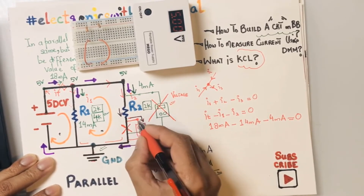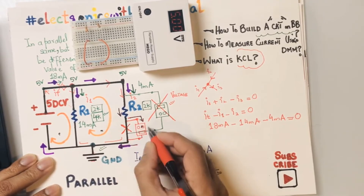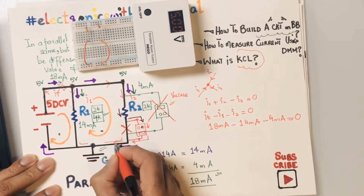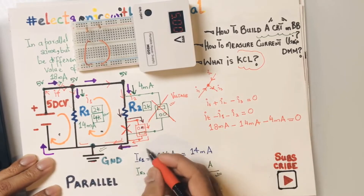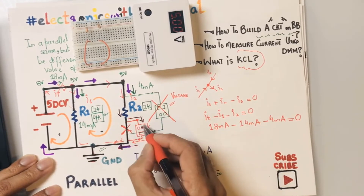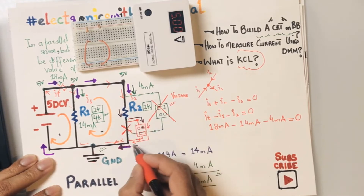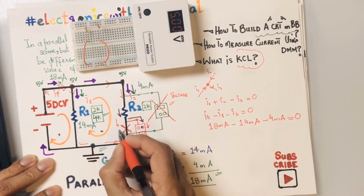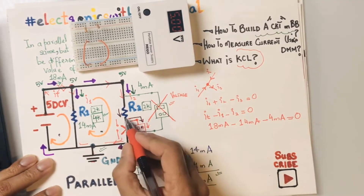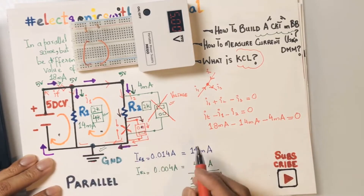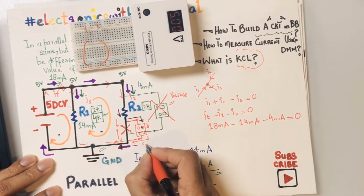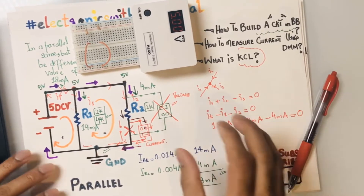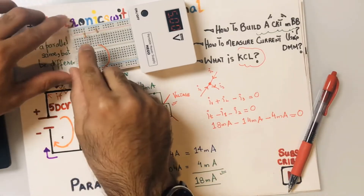To measure the current flowing through R2, I need to disconnect the wire — break the circuit at that point — and allow the current to flow through the multimeter instead. The current flows through R2, then takes the route through the multimeter, and then returns to the circuit. You're basically putting the multimeter in series with the resistor.